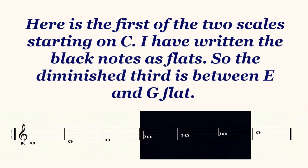Here is the first of the two scales starting on C, but starting on C is arbitrary because we can start on any note in the system. In this case I have written the black notes as flats, so the diminished third is between E and G flat. That is a bump that is inevitable in our notation system.